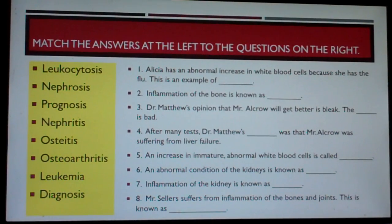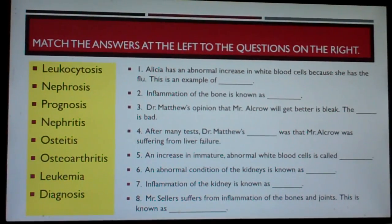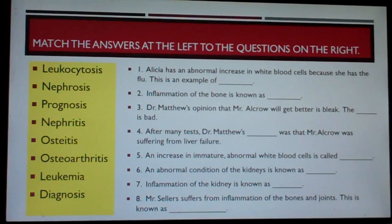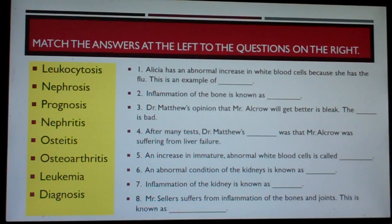Number four: After many tests, Dr. Matthew's blank was that Mr. Alcro was suffering from acute liver failure. Number five: An increase in immature, abnormal white blood cells is called blank. Number six: An abnormal condition of the kidneys is known as blank.